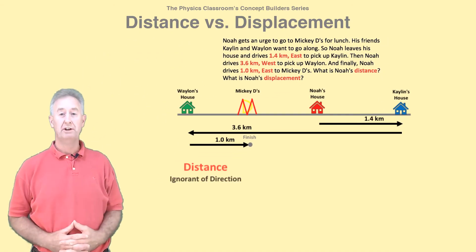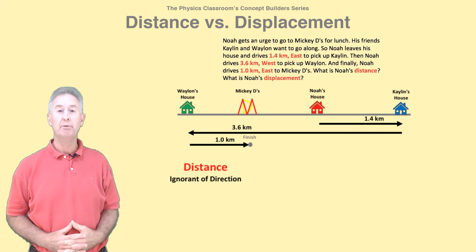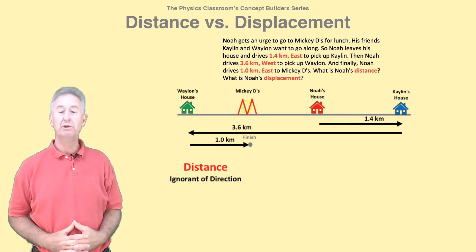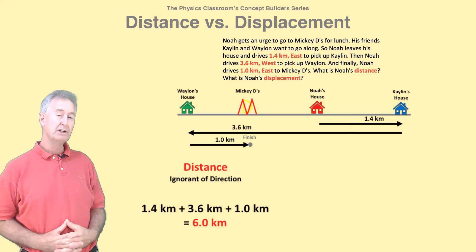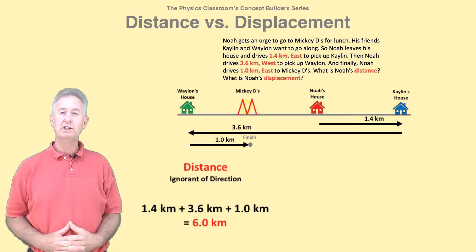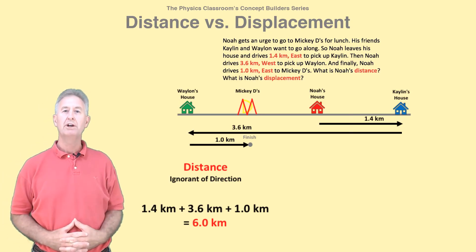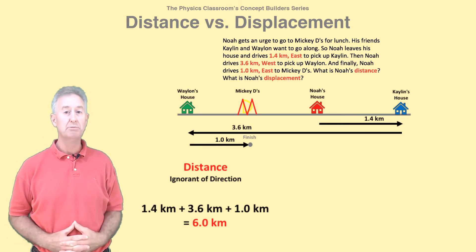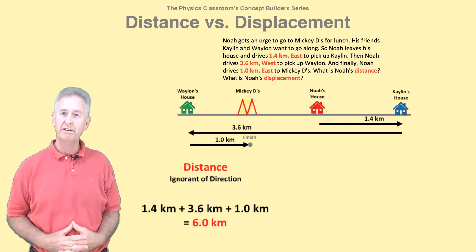Distance is direction ignorant, so determining the distance means we add up all the individual distances. The total distance is 1.4 plus 3.6 plus 1.0 kilometers. Noah drove a total distance of 6.0 kilometers — that's the amount of ground that is covered.